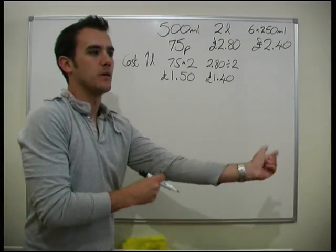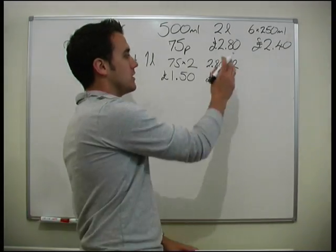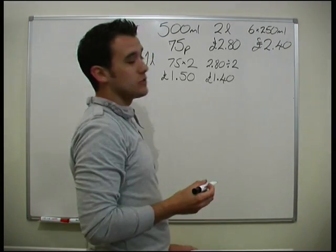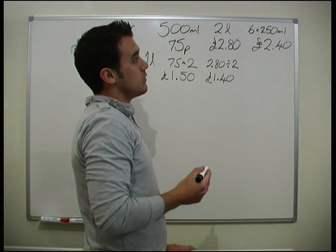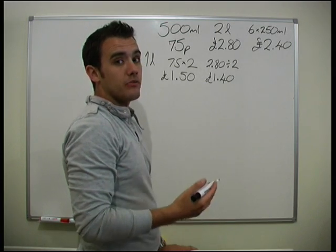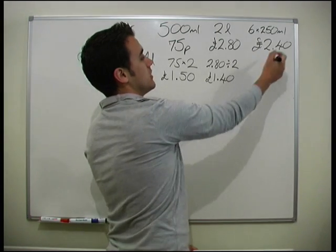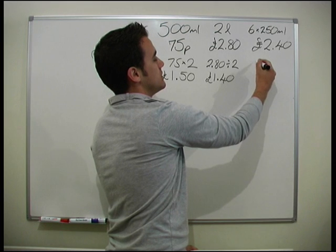Let's see if the cans are going to be cheaper. You'd expect them to be more expensive, but you never know with these sorts of questions. So how much have we actually got? 6 times 250ml. Well, if we worked that out we found that's 1.5L.